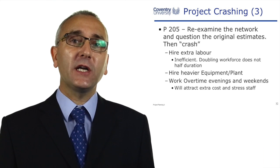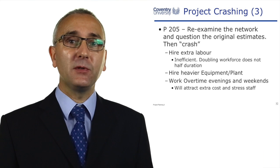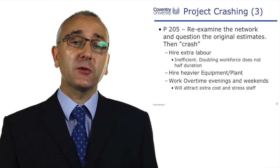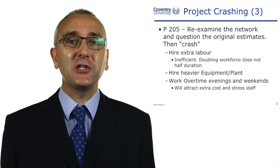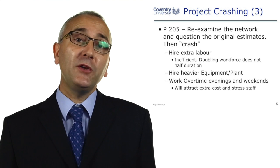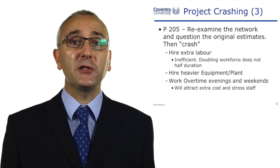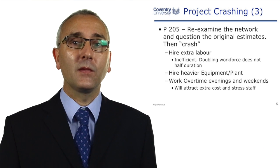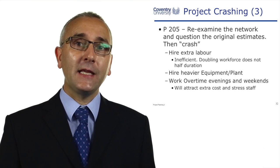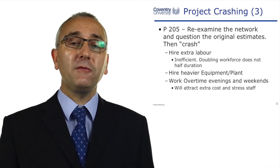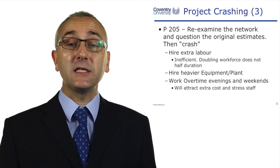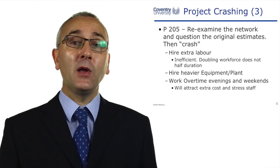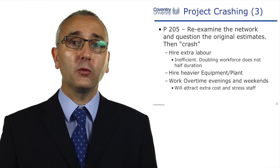Remember our network analysis was based on estimates of durations for the individual tasks — these are only estimates. When somebody says they think it will be ten days duration, it's an estimate. And when you go back to them and say you're on the critical path, they might say they can achieve it in eight days. What Lock doesn't say — but I suggest — is to challenge the dependencies. If you can improve the dependencies by adding more concurrent tasks or adding lead time, you're going to improve the overall project time.